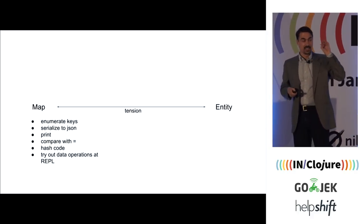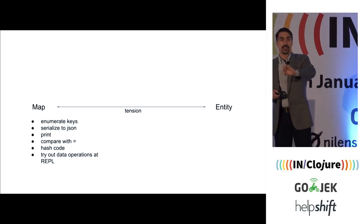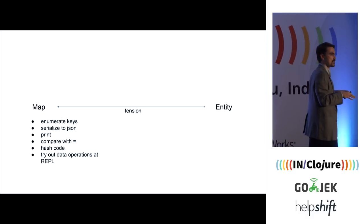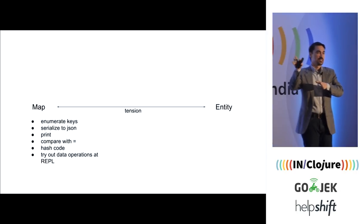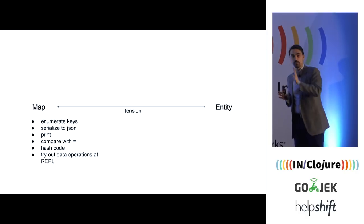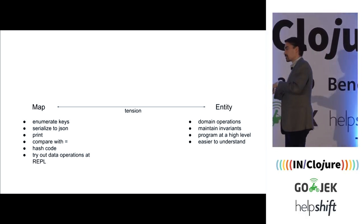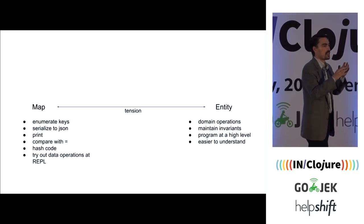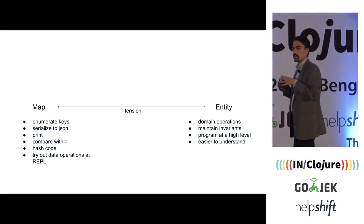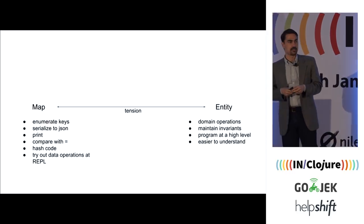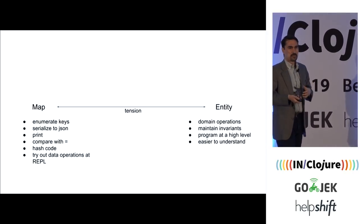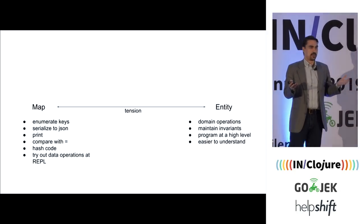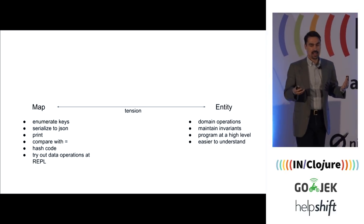There are nice things about treating it just like a map. You can print it out, serialize it to JSON, enumerate the keys, store it in a database, compare it with equals — things you can't easily do with an OO class where you have to write your own equals method and hash code. Lastly, you don't have to do the design up front. At the REPL you can do an assoc or an update-in without writing the operation — figure it out first, write those in your UI, then refactor it out later.